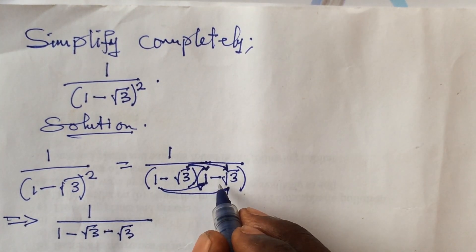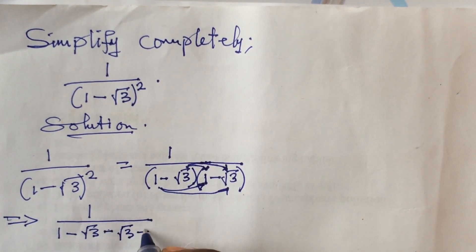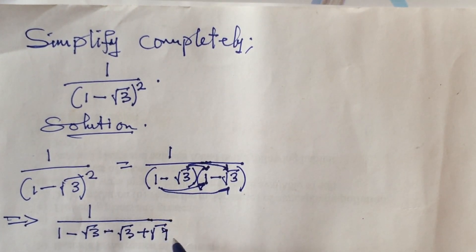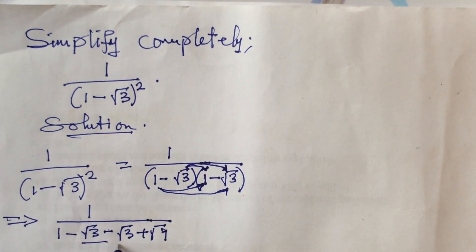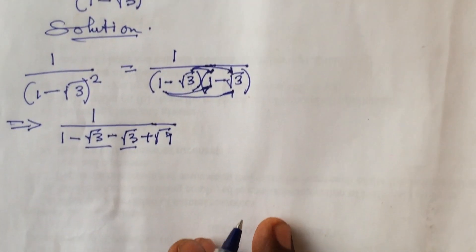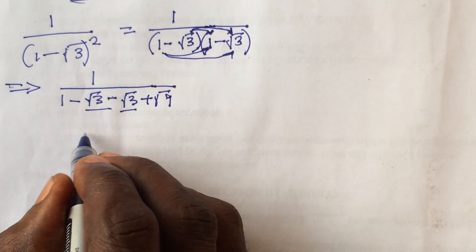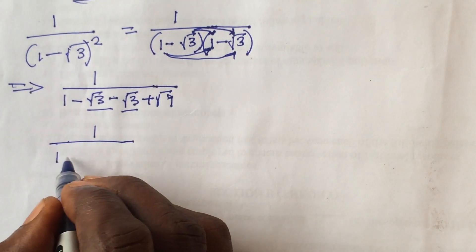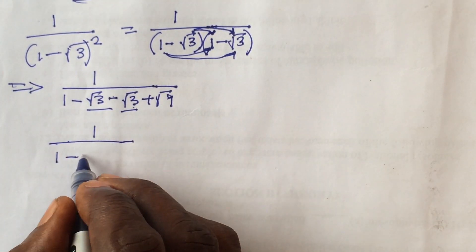We can add these together, so we have 1 over 1 minus two root 3 plus 3, because the square root of 9 is 3.